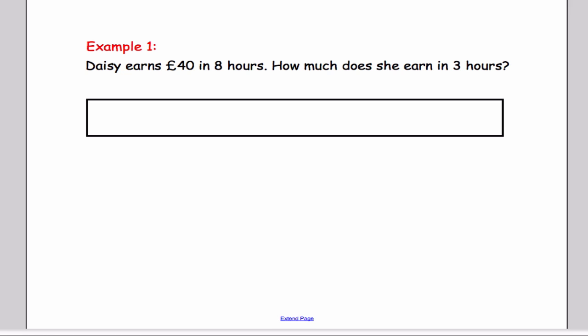So we can say in 8 hours, Daisy earns £40. We can set up a box like so: 1, 2, 3, 4, 5, 6, 7 and 8. So over the course of 8 hours, she makes £40.